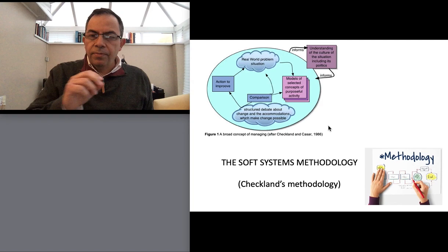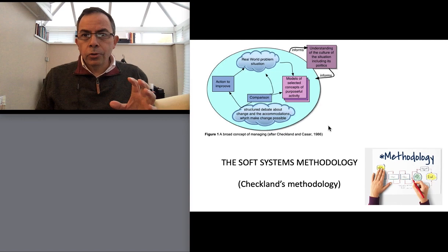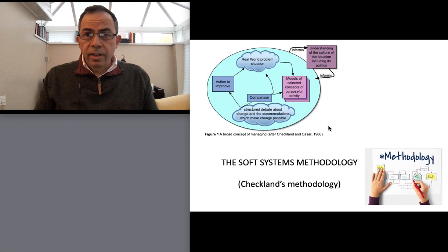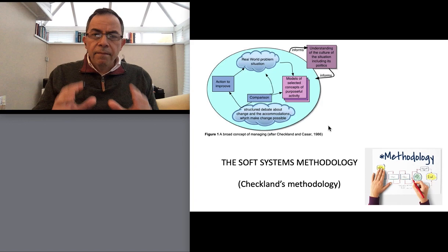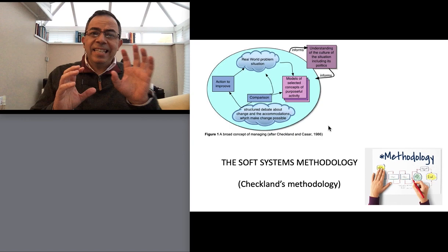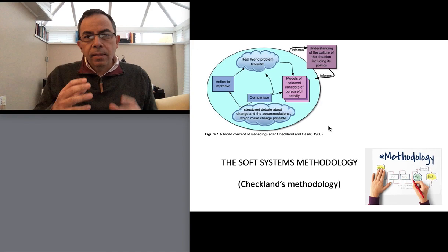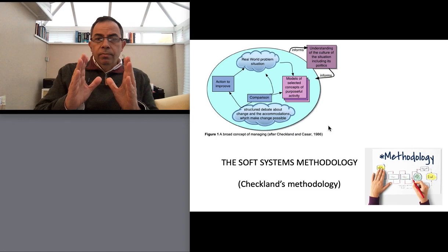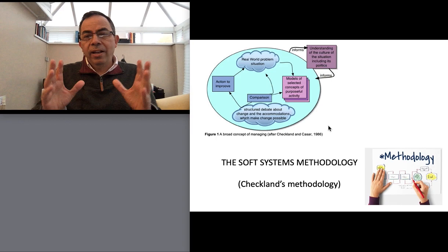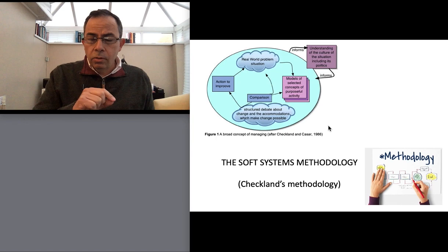Today's video is about the Soft Systems Methodology, also known as the Checkland Methodology. This is the warhorse of systems thinking — probably the best known methodology or strategy used as an ideal way to explain or put into practice what systems thinking is about. The methodology itself is a comparison between what is ideal and what is real: the ideal world and the real world.